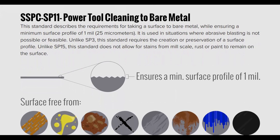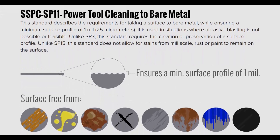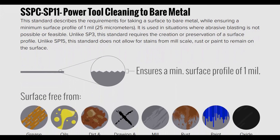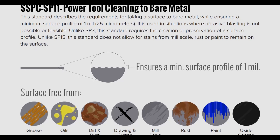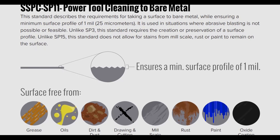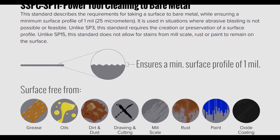SSPC-SP11 Power Tool Cleaning to Bare Metal: this standard describes the requirements for taking a surface to bare metal while ensuring a minimum surface profile of 1 mil. It is used in situations where abrasive blasting is not possible or feasible. Unlike SP3, the standard requires the creation or preservation of a surface profile. Unlike SP15, the standard does not allow for staining from mill scale, rust, or paint to remain on the surfaces.